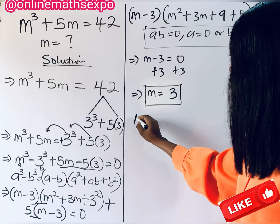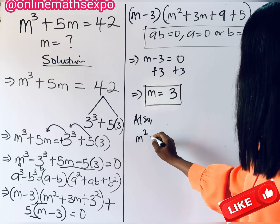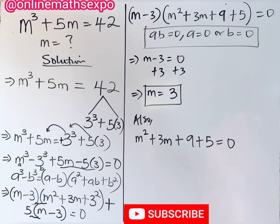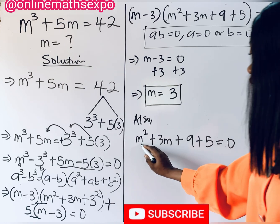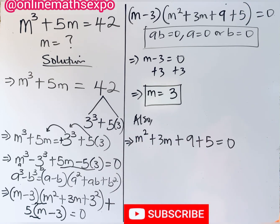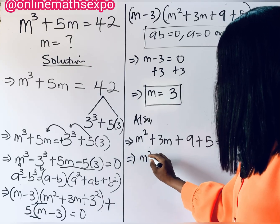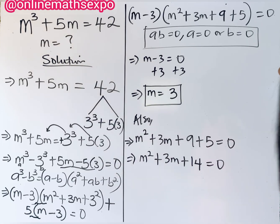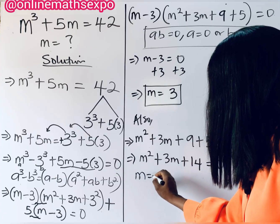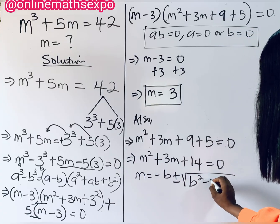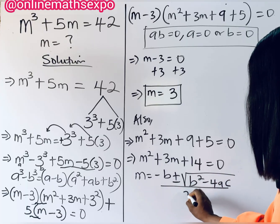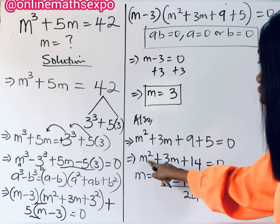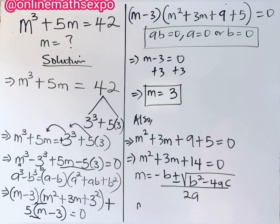Now let's solve the second factor: m² plus 3m plus 9 plus 5 equals 0, which is m² plus 3m plus 14 equals 0. You observe this is a quadratic equation since the highest power of m is 2. We solve it using the quadratic formula: m equals negative b plus or minus square root of b² minus 4ac, all divided by 2a.